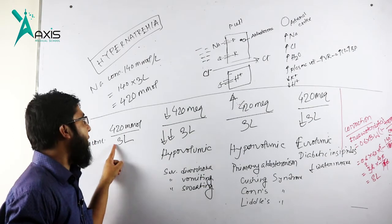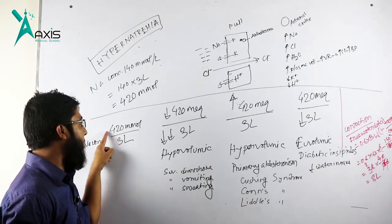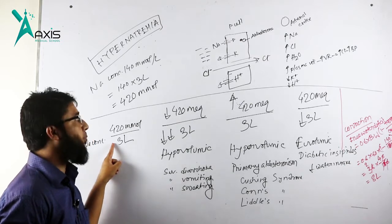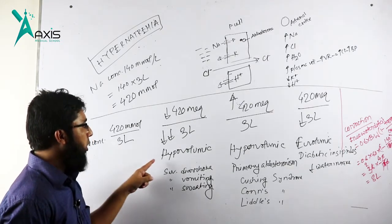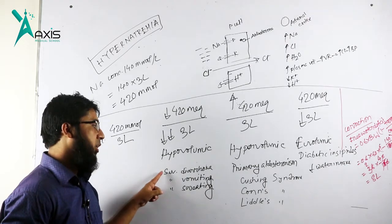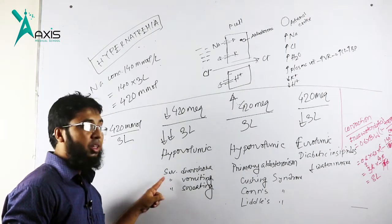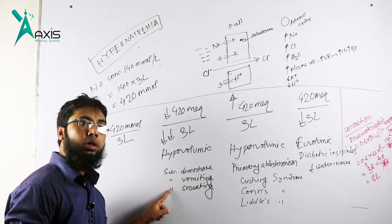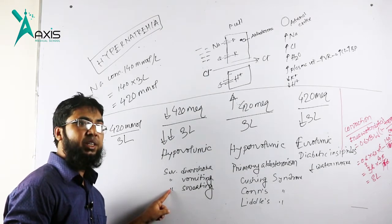Sodium can increase or plasma can decrease, causing hypernatremia. When a patient has severe diarrhea, severe vomiting, severe sweating, or excessive NG aspiration occurs.